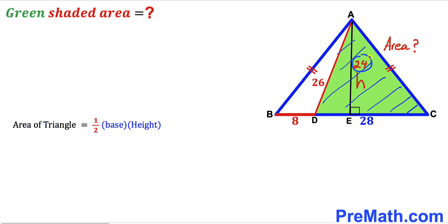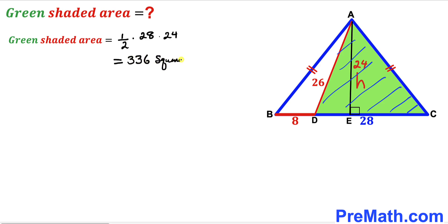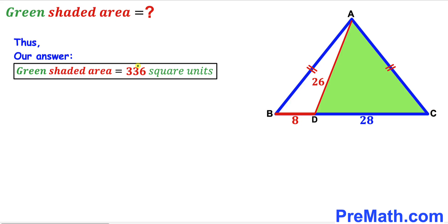The green shaded triangle area is one-half times 28 times 24. If we simplify and multiply, that gives us 336 square units. The area of this green shaded triangle ACD is 336 square units, and that's our final answer.